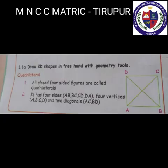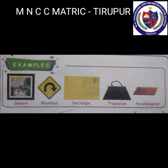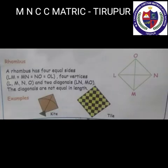Quadrilateral: all closed four-sided figures are called quadrilaterals. See the picture — it has four sides AB, BC, CD, DA and four vertices A, B, C, D. Types of quadrilaterals include: square, rhombus, rectangle, trapezium, and parallelogram.